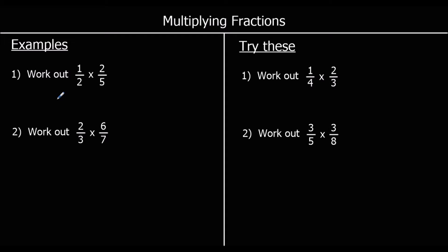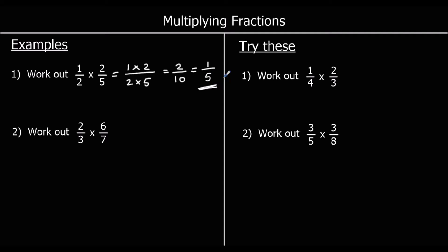The first question says work out one-half times two-fifths. So we're going to do one times two for the top, and two times five for the bottom. One times two is two, two times five is ten, so we've got two-tenths. We can simplify that because the top and the bottom are both in the two-times table, which makes it one-fifth. We can half the top and half the bottom. So one-half times two-fifths is one-fifth.